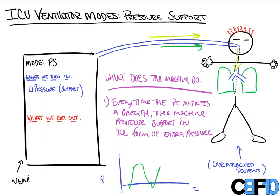As a result, we're going to get a tidal volume out of this. This is because of the relationship of pressure and volume — once you have a preset amount of pressure, it will fill a certain amount of volume in the patient's lungs.